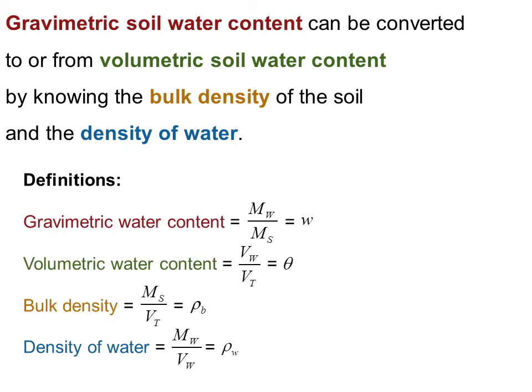So to quickly define all these terms, the gravimetric water content is the ratio of the mass of water in soil to the mass of soil solids, and that's usually denoted by the letter W.